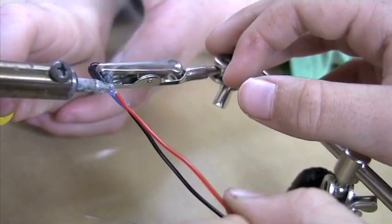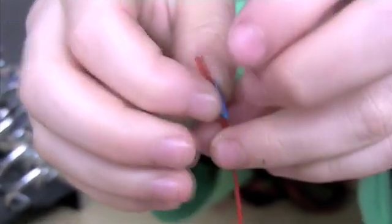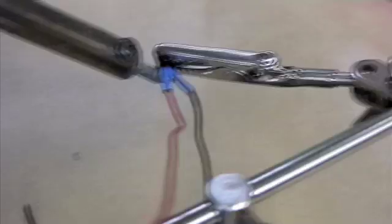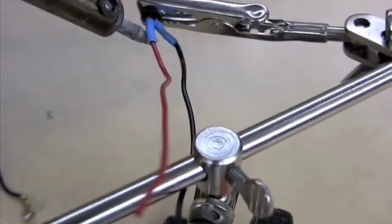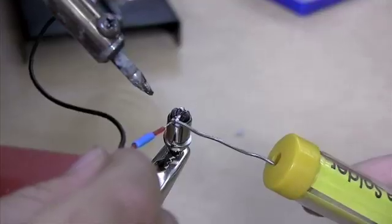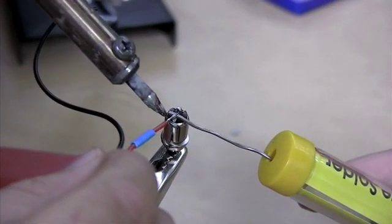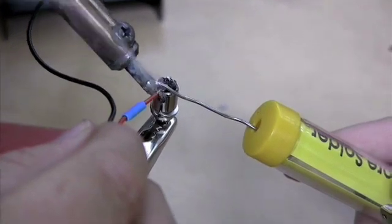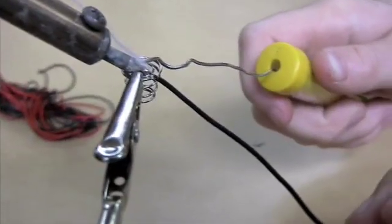Solder the red wire to the other terminal. Solder the other end of the red wire to the switch. Solder the black wire to the spring.